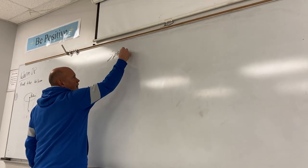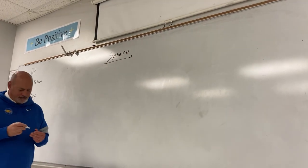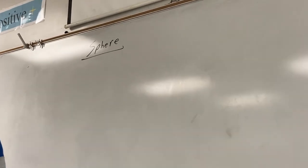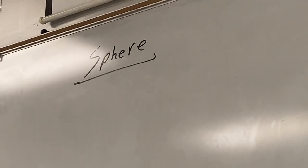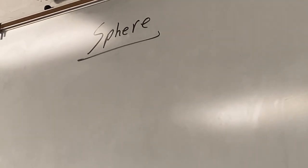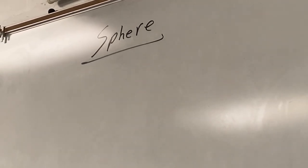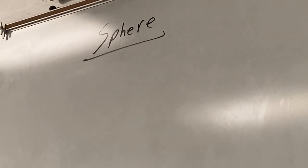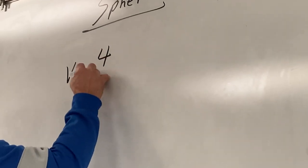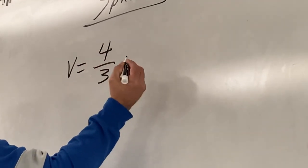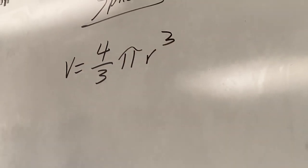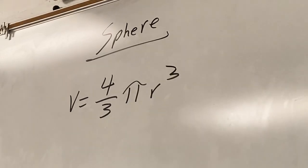We're going to find the volume of a sphere. Look around — somebody find the formula for the volume of a sphere; it's somewhere in the room. Layla, what do you got? V equals one third. Try again, you're looking at it wrong. It's not one third. Pay attention: four thirds pi times the radius cubed will find us the volume of a sphere.